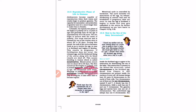Initially the menstrual cycle may be irregular when it first happens at puberty, that is Menarche. It takes some time to become regular. As Paheli notes, the reproductive life of a woman lasts from Menarche to Menopause, when the menstrual cycle stops.